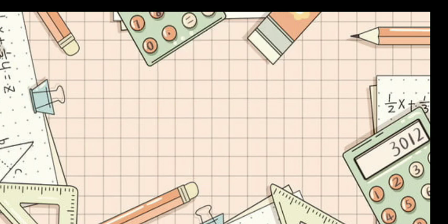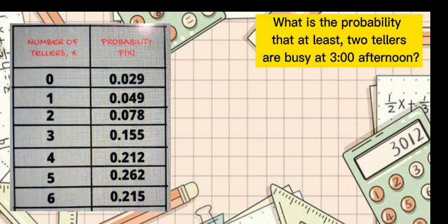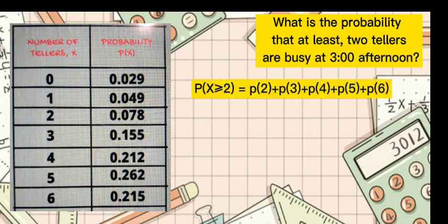Example number 2. In the Puregold store, the number of tellers busy with customers at 3 o'clock afternoon varies from day to day. What is the probability that at least 2 tellers are busy at 3 o'clock afternoon? In our inequality symbol, the word 'at least' is greater than or equal to.